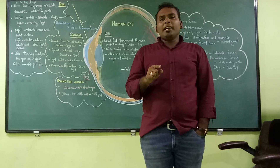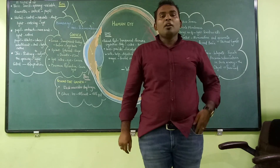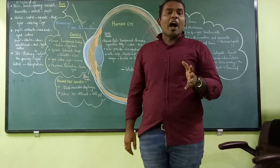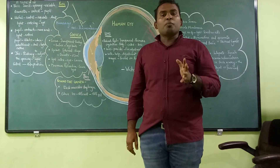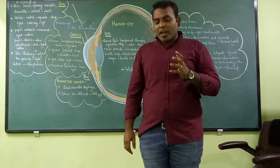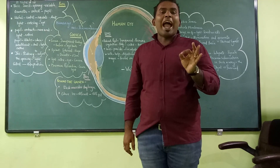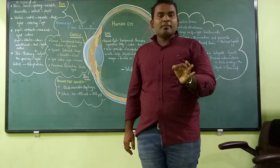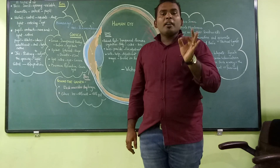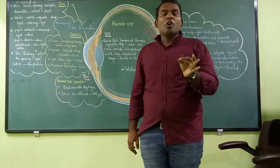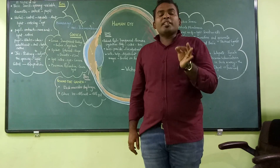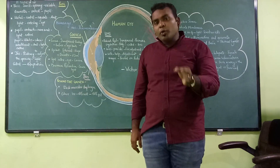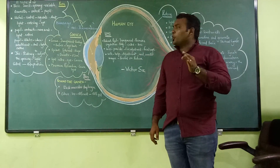Light is an electromagnetic radiation which produces sensation of vision. If I make you stand in a dark room, you will not be able to perceive the things in and around you — just because of the absence of light. This light enters into your eyes, produces an image on your retina, which is then sent to the brain and you perceive the object. So today's session, you are going to look at the human eye.